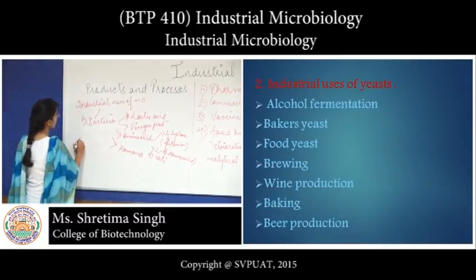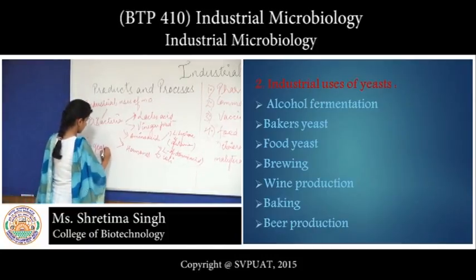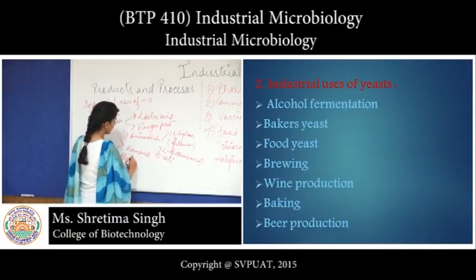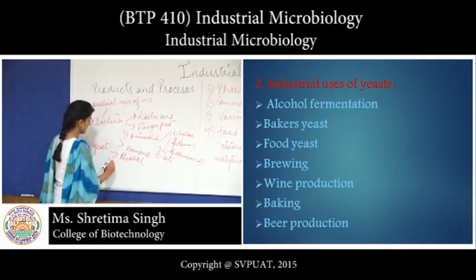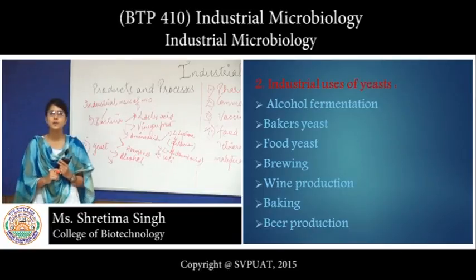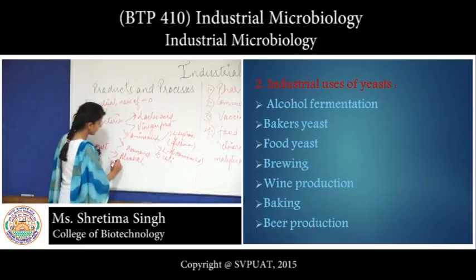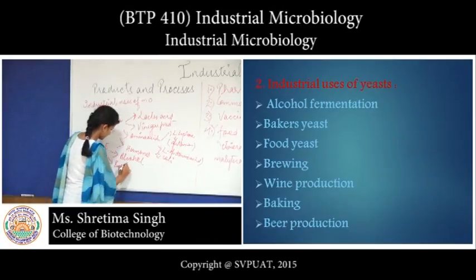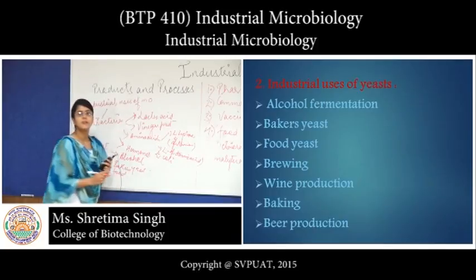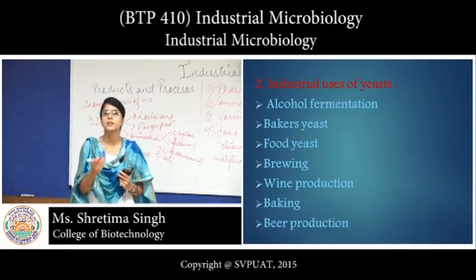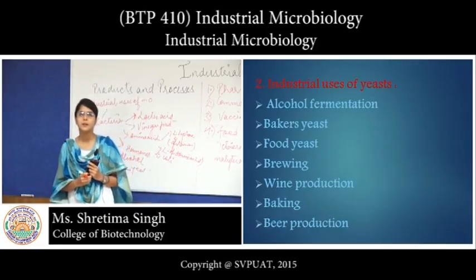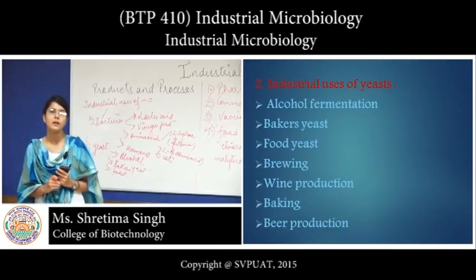The next group involves yeast, which includes the production of various alcohols through alcohol fermentation. Yeast is also used as baker's yeast, which is consumed as food and used as feed supplements. Food yeast generally involves single cell protein, which is produced by the microbial mass production of proteins and is generated by methane-oxidizing bacteria like Methanococcus and Methanothermus.